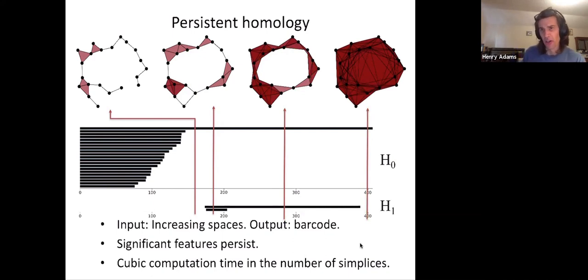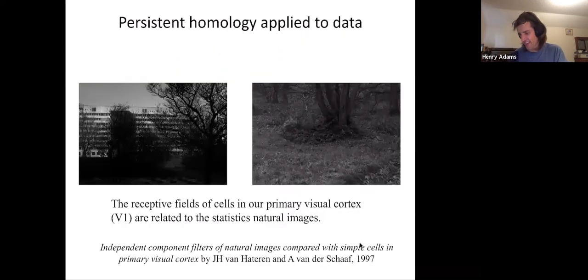So you might read this barcode as saying, well, this data set really has a single significant one-dimensional hole. Here it is, and it has another hole, but I'm going to record that as probably sampling noise.